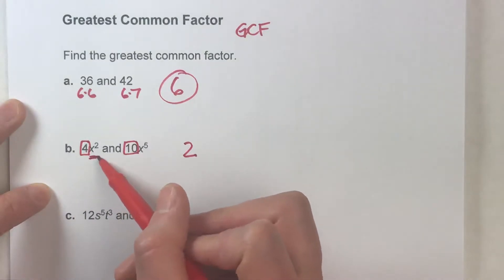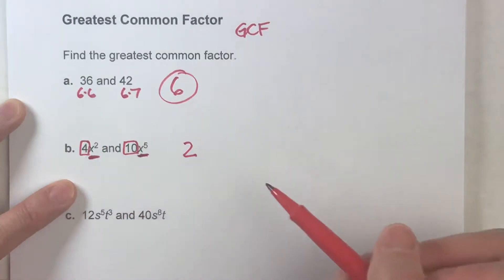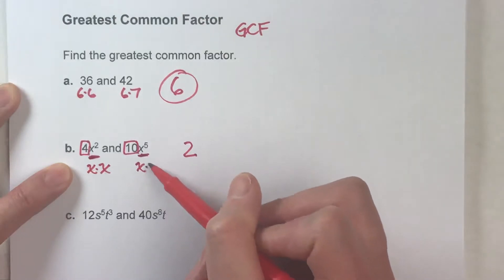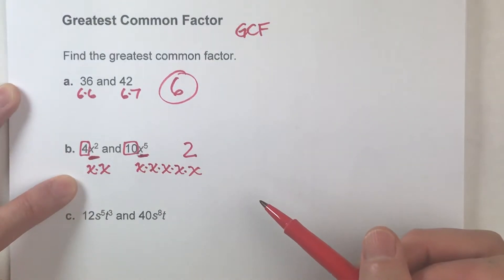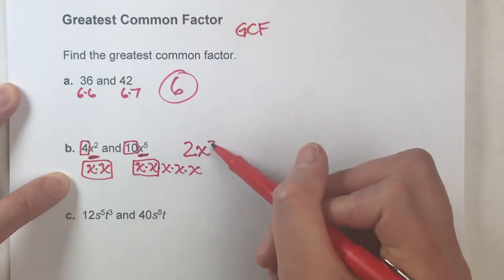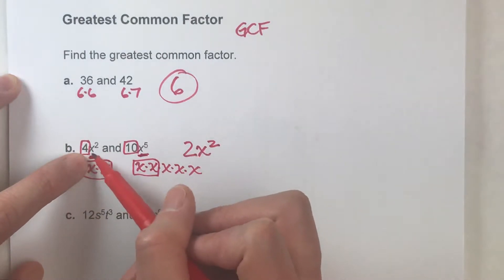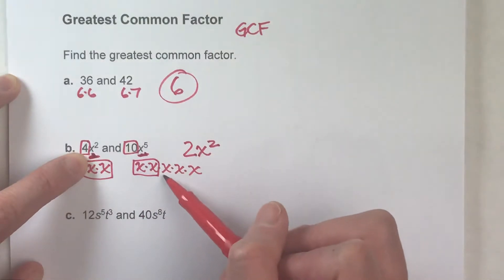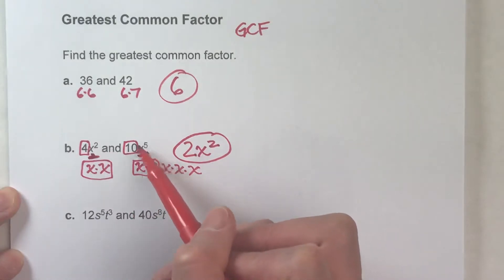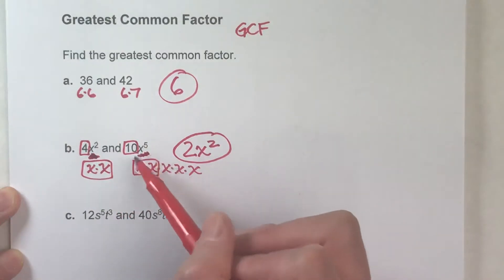Now let's look at the variable part. We've got x to the 2nd power and x to the 5th power. You can think of x squared as x times x, and x to the 5th as x times x times x times x times x. They both have an x times x in common, so x squared is the biggest expression that goes into both. You look at the variable part and find the one with the lowest exponent — in this case x squared — and that is your greatest common factor.